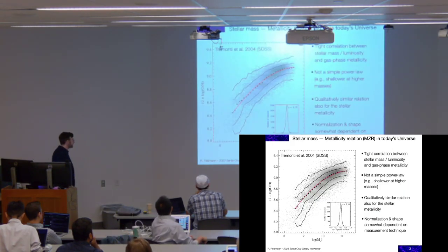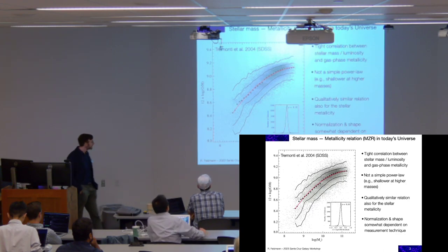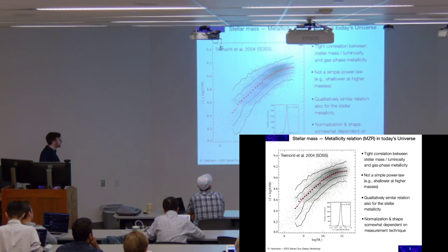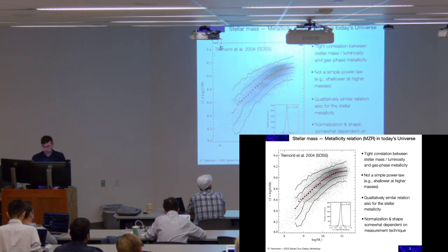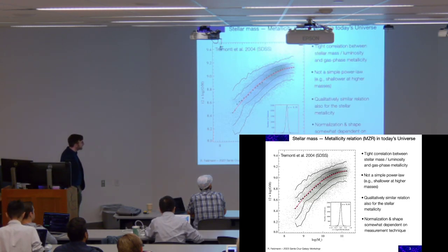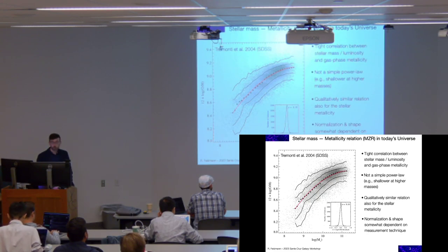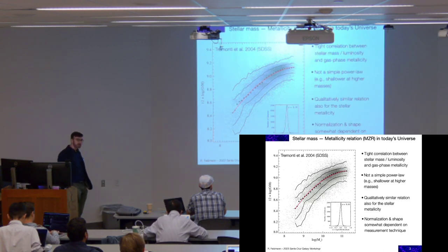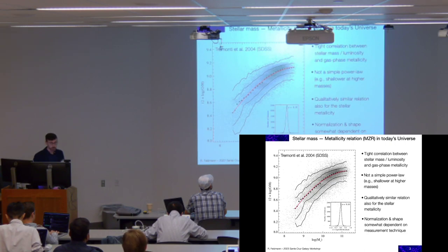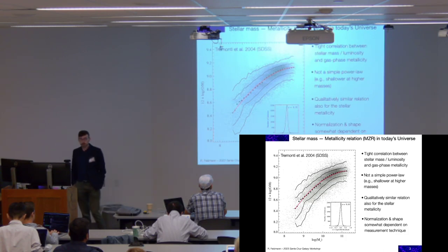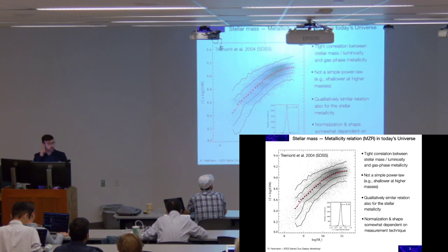If you plot the stellar mass and the gas-phase metallicity, we obtain a plot which is the stellar mass-metallicity relation — a very tight correlation between stellar mass or luminosity and gas-phase metallicity. It's not a simple power law; it gets shallower at the high-mass end. A very similar relation also holds for the stellar metallicity, the metallicity of stars. You can understand this because stars form out of the gas, and if the gas shows this kind of relation, you will also imprint a similar relation on the stars. The normalization and shape of this relation is somewhat dependent on the measurement technique, making it a little difficult to compare observational data to simulation predictions.